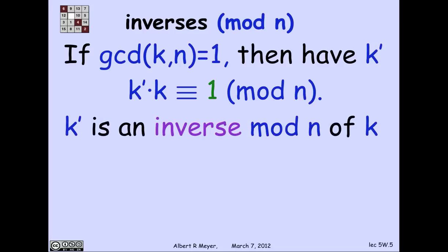So how are we going to prove this? And it's going to turn out to be an easy consequence of the fact that the GCD is a linear combination. So how am I going to find this k prime that's an inverse of k? Well, remember, given the GCD of k and n is 1, I have a linear combination of k and n is 1.